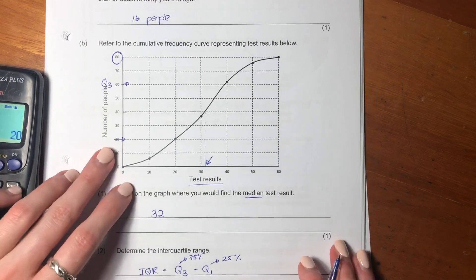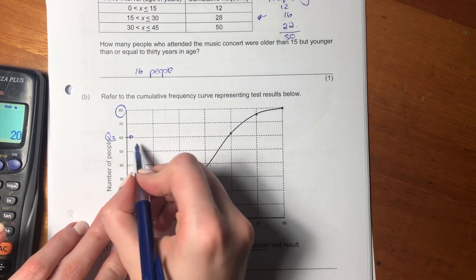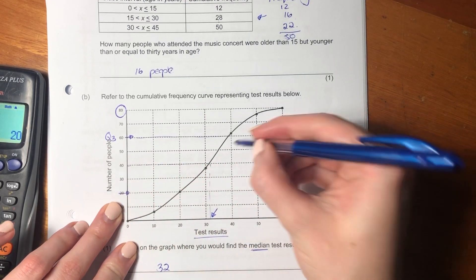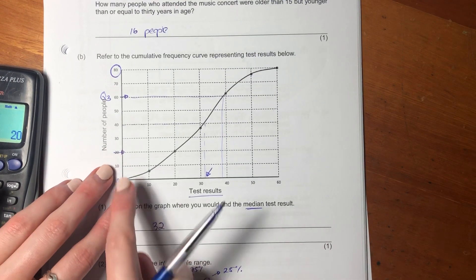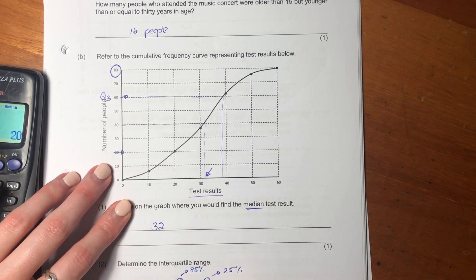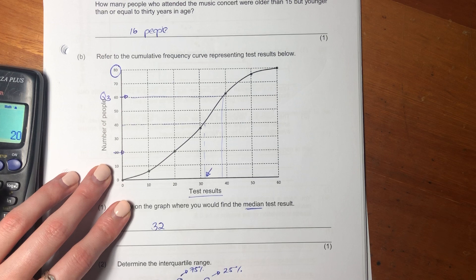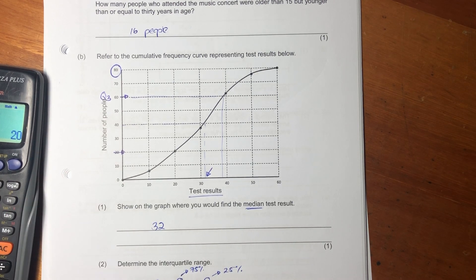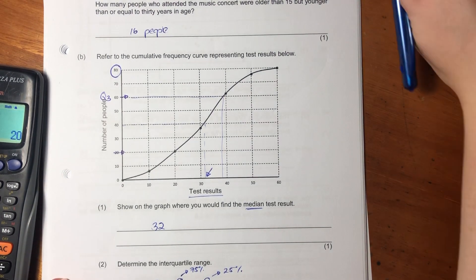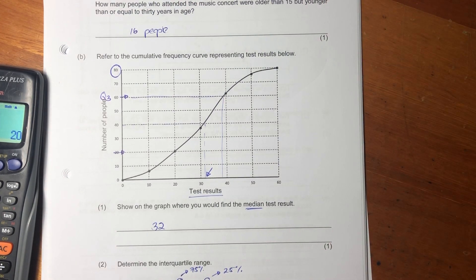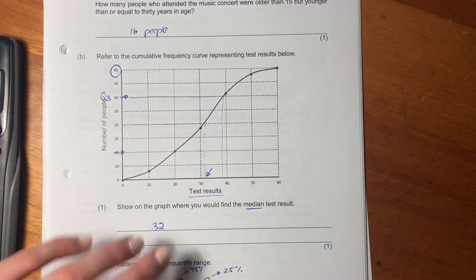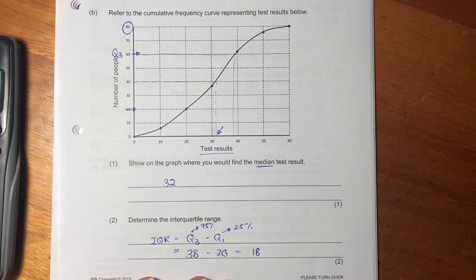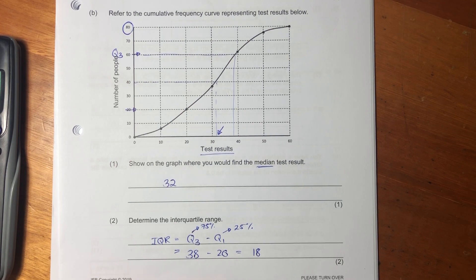So the interquartile range, what is Q3 over here? It's probably around about 38. And Q1 is exactly 20. So the interquartile range is 18. So it's important to remember what these different things mean. Sometimes you're given a box and whisker, that sort of thing. But here, we're just using an ogive. So the answer here is 18.